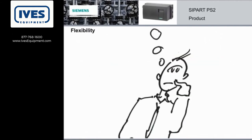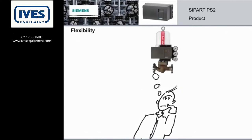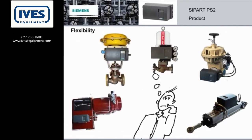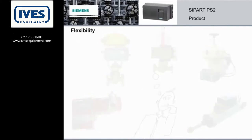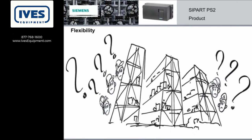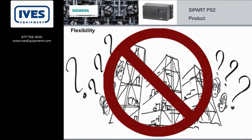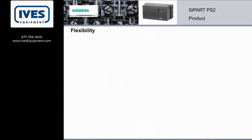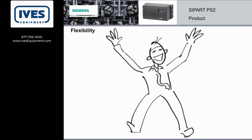With the PS2, there is no need to be confused when it comes to selecting a positioner to fit your actuator. There are over 400 different mounting kits available for non-standardized actuators to allow the PS2 to mount onto your control valve. Having one device for all your applications also eliminates stocking issues, saving money. Because if there's a valve out there, chances are we have put a PS2 on it.